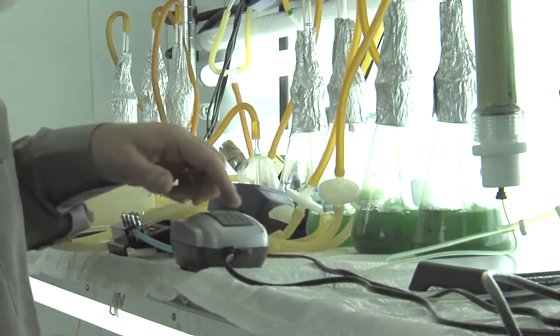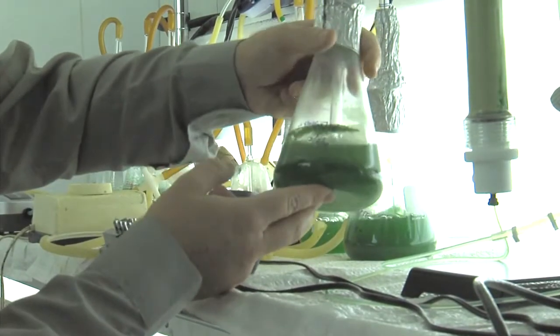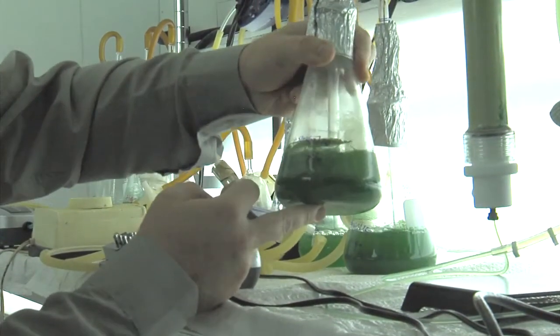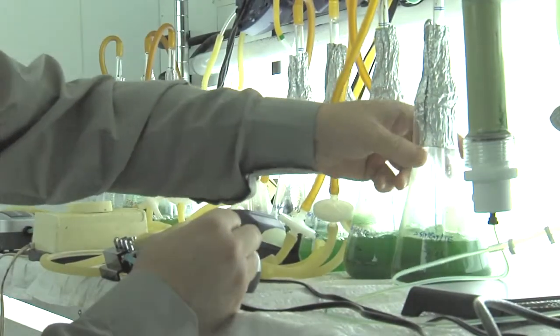These cells are producing fatty acids. The fatty acids are nicely here on the side of the flask, and they are produced from light.